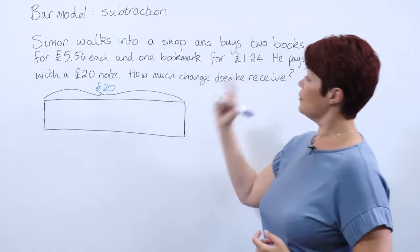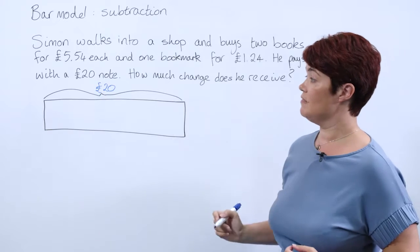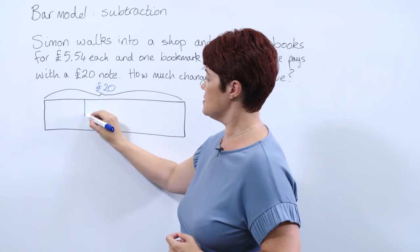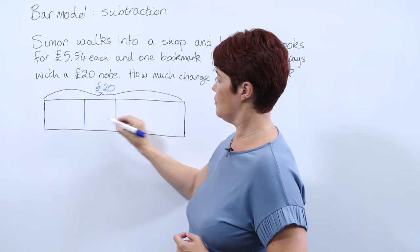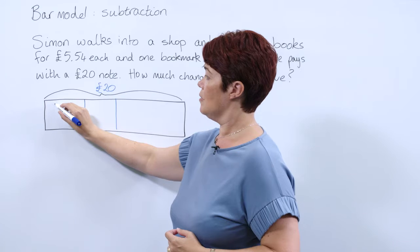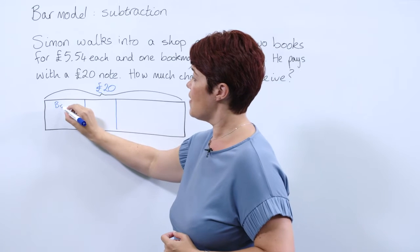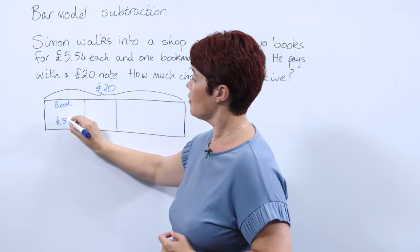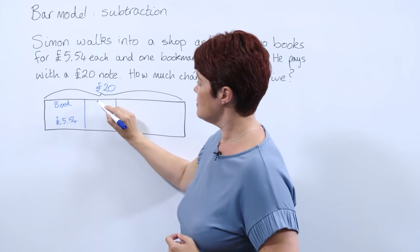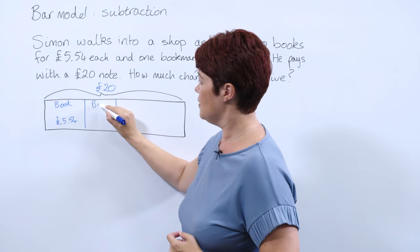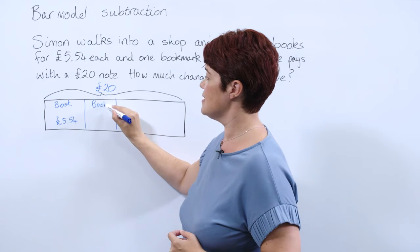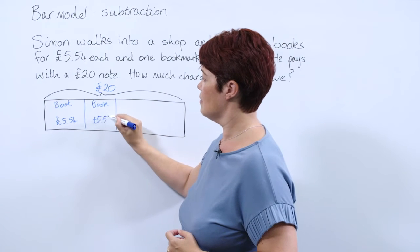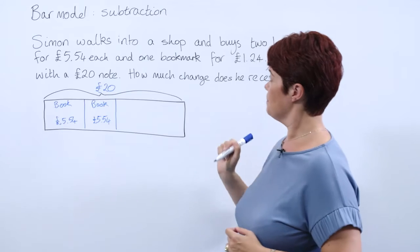He bought two books for £5.54, so we're going to use our bar to represent those two books for £5.54. We try to keep as much as possible the proportionality within our bar so it gives the pupils a good idea of what we're spending.